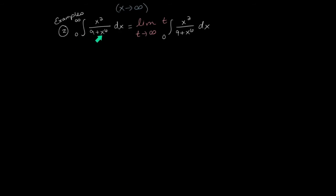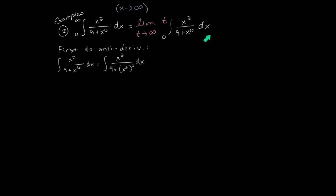Let's look at another example. In this example, you can see very clearly what makes this integral improper — one of the x values is infinite. We clearly do not have a closed bounded interval, so the fundamental theorem of calculus does not initially apply. So I'm going to replace that infinity with a t and apply the fundamental theorem of calculus just from zero to t, then take the limit as t approaches infinity for the resulting expression. Let's just work on the antiderivative first, then we'll worry about plugging in and taking the limit afterward.